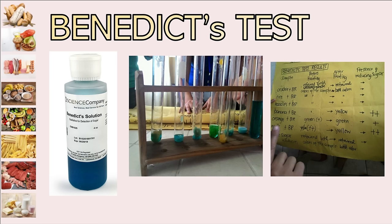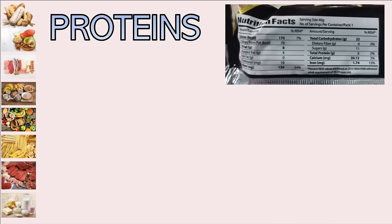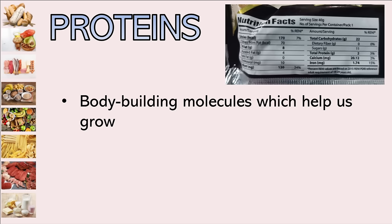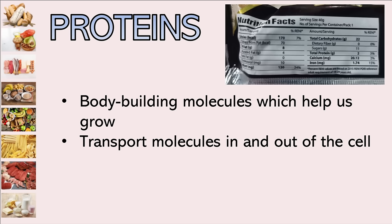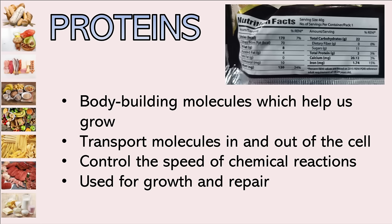That's all for carbohydrates. Let's move now to the second type of biomolecule, which is protein. Proteins can also be found in nutrition facts, listed below carbohydrates. Proteins are bodybuilding molecules which help us grow. They transport molecules in and out of the cell, control the speed of chemical reactions through enzymes, and are used for growth and repair. Proteins make up the structure of living things — hair, nails, skin, bones, and muscle are all made of protein.